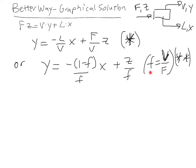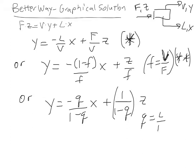I can also write this equation as Y is equal to negative Q over 1 minus Q times X plus 1 over 1 minus Q times Z. And in this case, Q is equal to L over F. I'm going to call this one triple asterisk.